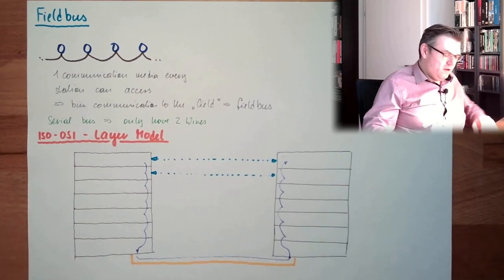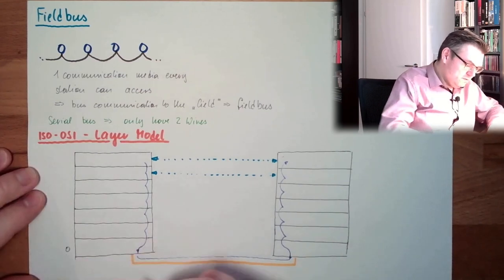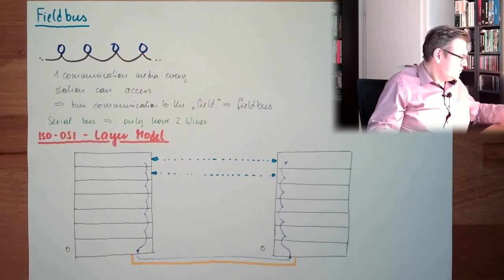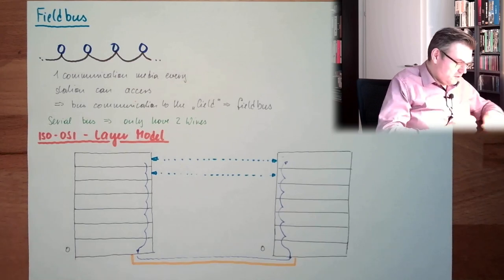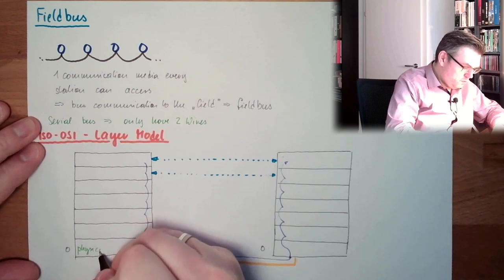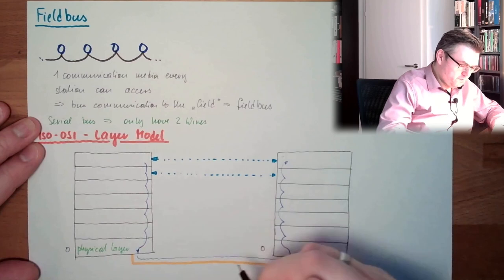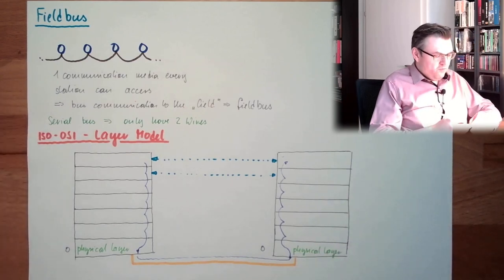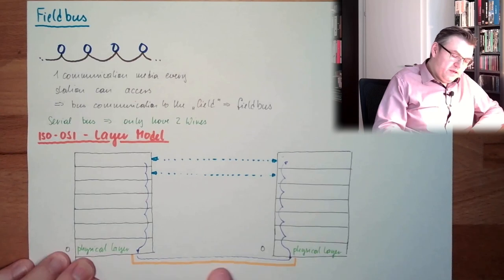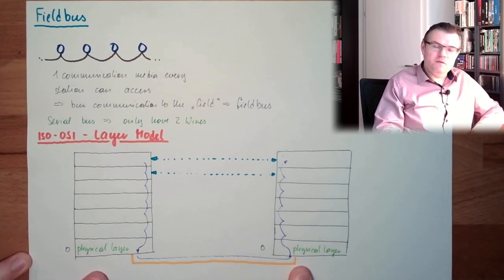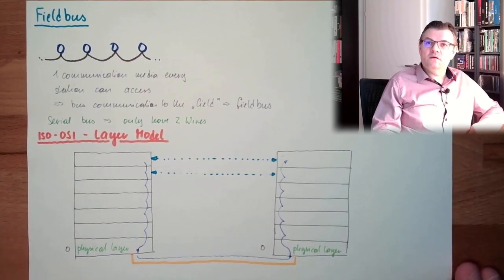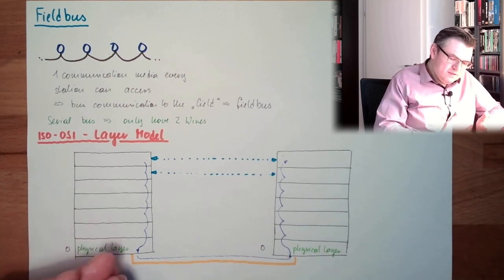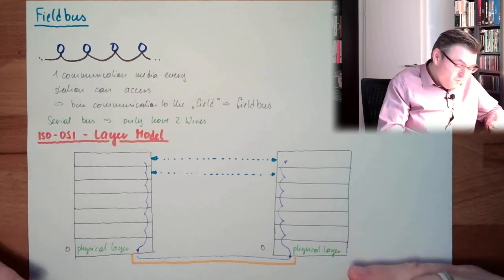And one example - the lowest layer, layer number zero. This is the so-called physical layer. This physical layer, for instance, defines what is the communication media. I said copper wire - this is one possibility. But there also might be light, mono-mode, multi-mode fiber optics, or is it copper, or maybe even radio. Physical layer takes care of it.